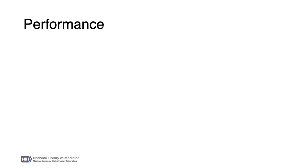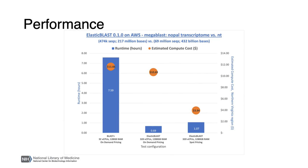Now I'd like to show you an example of Elastic Blast performance. In this example, MegaBLAST with default parameters was used to align the Nopal transcriptome described earlier against the NT BLAST database. This comprises 474,000 queries totaling 217 million bases versus 69 million sequences in NT, which contains about 432 billion bases. This BLAST search is too large to run on the NCBI web BLAST service. As shown in the first column, running BLAST+ on a single server with 32 virtual CPUs and 128 GB of RAM will take about 7.5 hours to complete and cost about $11, whereas Elastic Blast on 10 times as many virtual CPUs will take about 40 minutes and cost about $10. This assumes on-demand pricing at AWS.